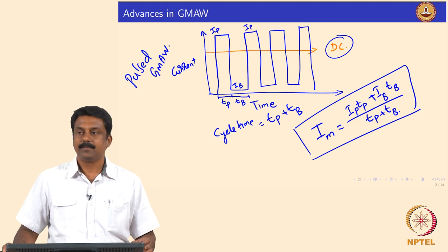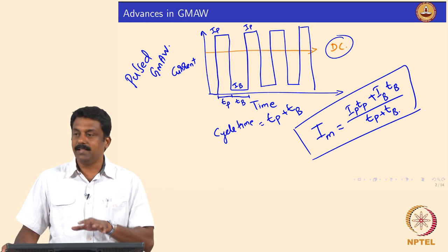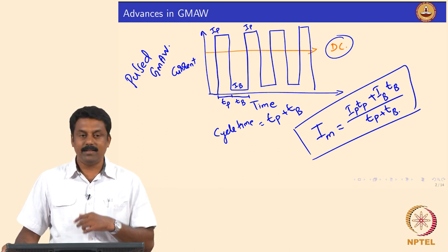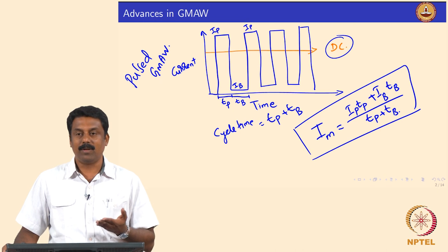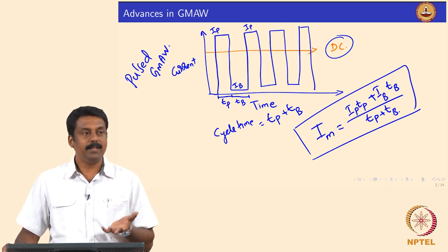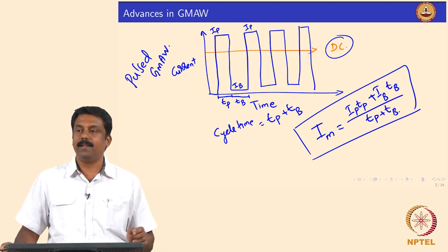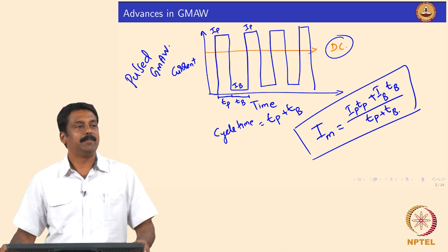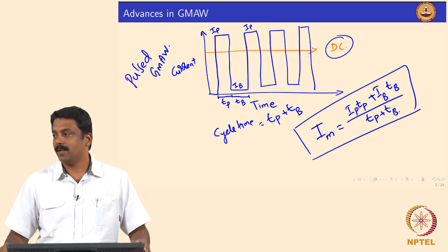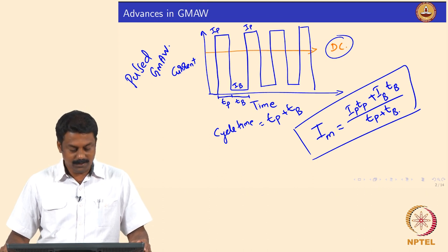In this class, we will see how to choose these pulsing parameters — what is special about it. We will look at videos showing how transfer takes place during pulsing, then do some calculations to identify IP and TP for a given material, and then move on to the next advancement in GMAW.